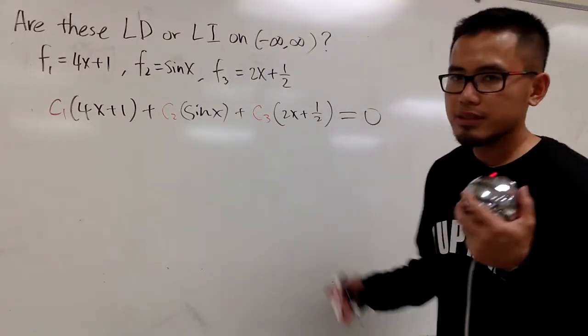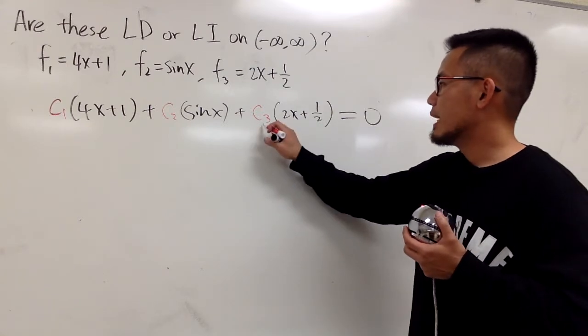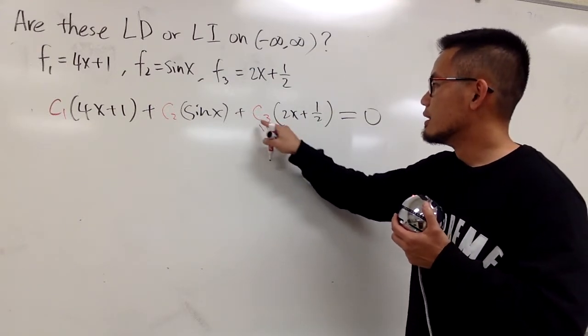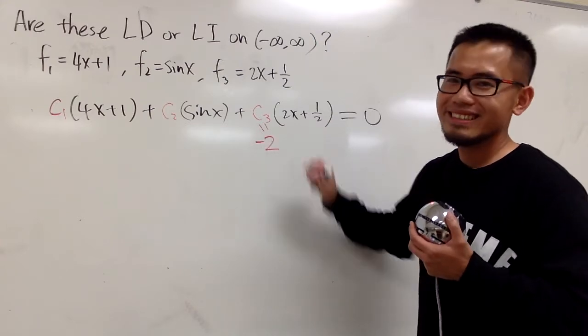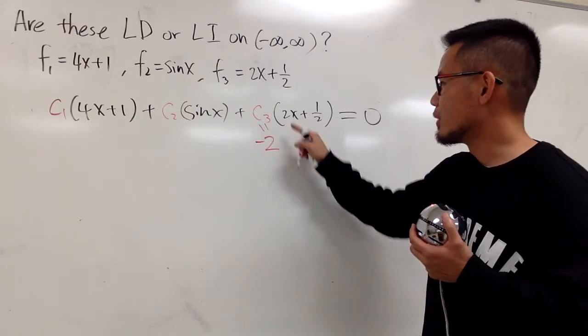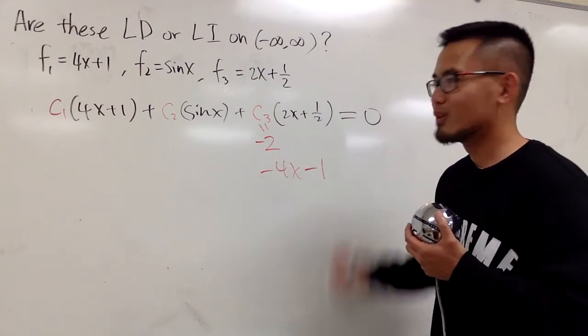Alright, so this is how I'm going to do it. Perhaps many have guessed here already. All I'm going to do is, I just need to make c3 to be negative 2. Because negative 2 times this will give us negative 4x, negative 2 times that is minus 4, right?